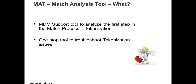So what is MAT? MAT is the match analysis tool developed by the MDM support team, basically to analyze and troubleshoot tokenization-related issues in MDM. Tokenization plays a key role in the match process. This is a self-assisting, one-stop tool to resolve tokenization-related issues.